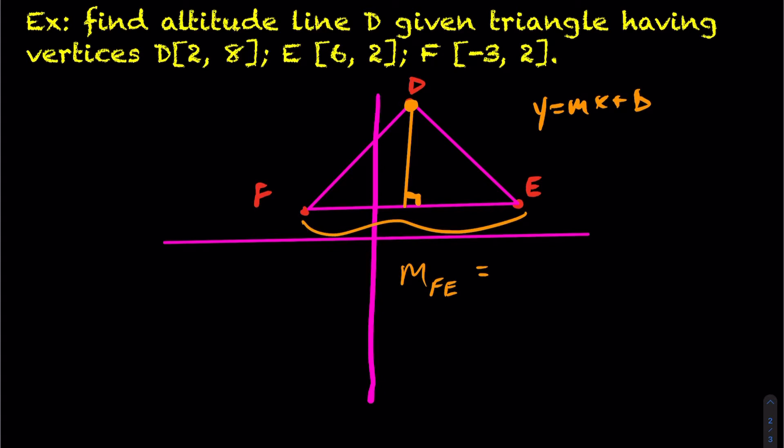Well, the slope of FE, let's take a look here. I'm going to label this x1, y1. I'll label this point x2, y2. In which case we get y2 minus y1 over x2 minus x1.